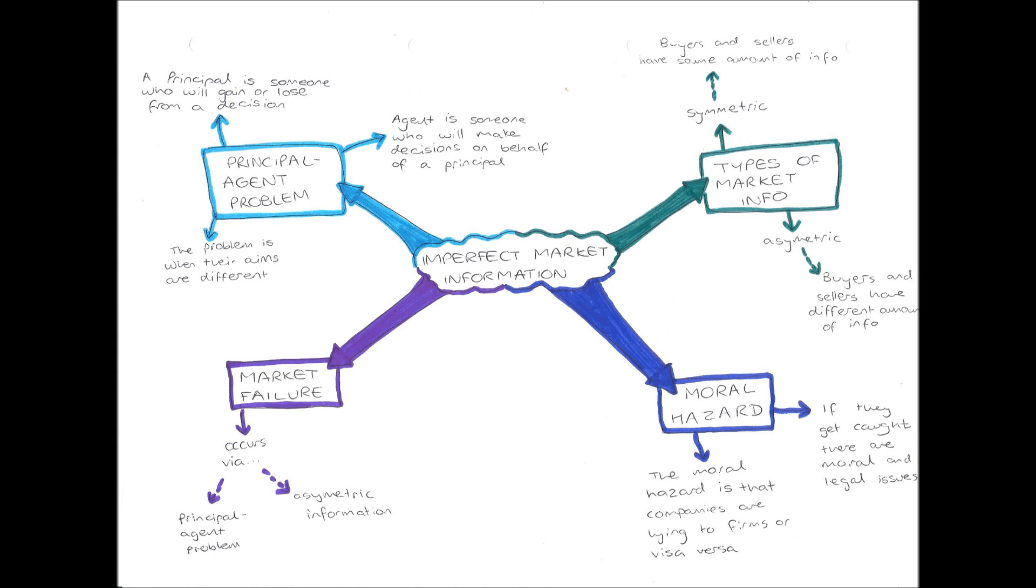Firstly, you need to know who principals and who agents are. A principal is somebody who will gain or lose from a decision. For example, the shareholder of a company. If the company does badly, the shareholder doesn't get any money back, but if the company does well and makes a high profit, they will get a dividend or a small chunk of money back from the company.